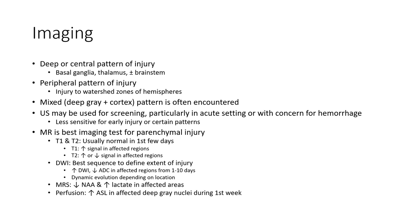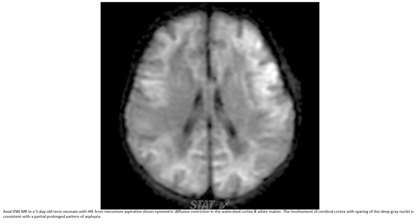Diffusion: increased signal in affected deep gray nucleus during the first week. This is DWI in a five-day-old term neonate with HIE from meconium aspiration, showing symmetric diffusion restriction in the watershed zone and white matter.